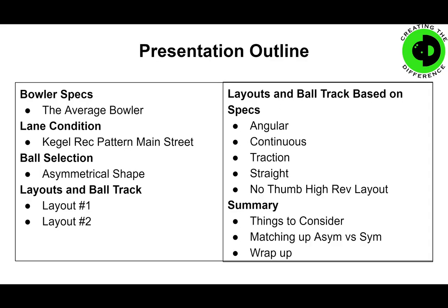The way the presentation is going to go, we're going to give you some of the bowler specs. We've determined what we consider the average bowler and we're going to put them on an average pattern which happens to be a recreational pattern called Main Street, but we're going to use a symmetrical core shape to talk about the layouts. We've done a presentation in the past on symmetrical shapes. This one's going to be about asymmetrical shapes. I'll give you a couple of generic layouts, then we'll talk a little bit about the four types of ball motion — continuous, angular, traction, and straight. We'll also do a layout for a high rev rate, no-thumber, or two-handed layout as well.